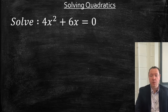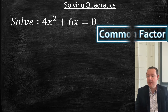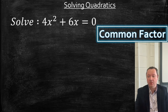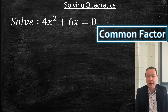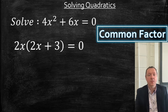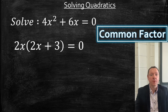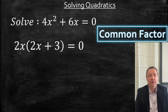Solve 4x squared plus 6x equals 0. In this one, we look to see if there's a common factor — we'll always do that. And there is a common factor. The common factor is 2x. So we can take 2x outside the bracket and we've got 2x plus 3 inside the bracket. If you need help with factorising, look at the previous video on factorising.